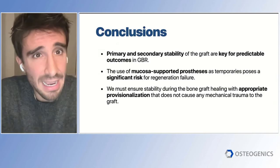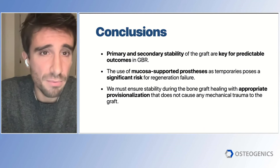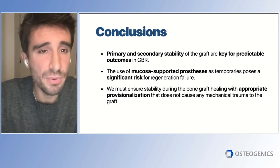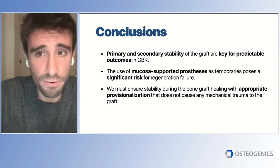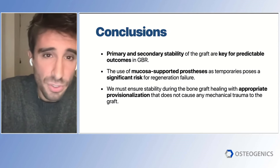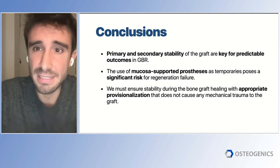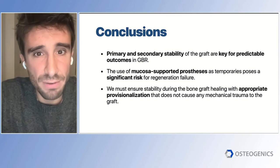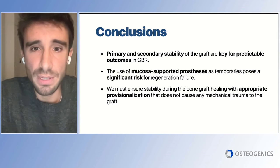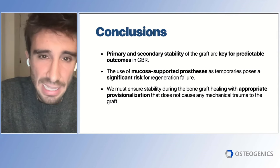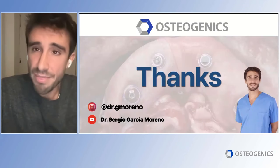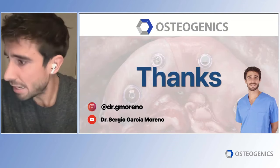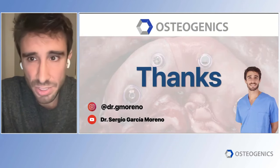To conclude, I want to repeat the key messages: primary and secondary stability of the graft are key for predictable outcomes in GBR. The use of mucosa-supported prostheses as separators poses a significant risk for regeneration failure. We must ensure stability during bone graft healing with appropriate provisionalization that does not cause any mechanical trauma to the graft. Thank you all for your attention. I think we have some remaining time for questions, and I will be delighted to answer all your doubts.